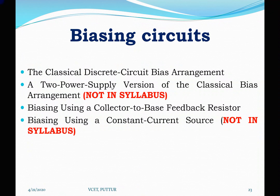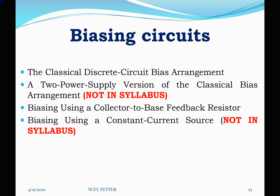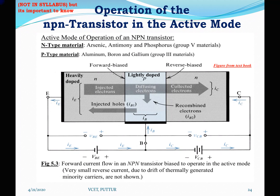Good morning. Peter, yesterday's class, we had seen what a BJT is, how it can be biased, and we have totally four different types of biasing circuits, out of which we will be studying two different types of biasing. Before going into the biasing circuit, we need to understand how the base current, the emitter current, and the collector current are related to each other.